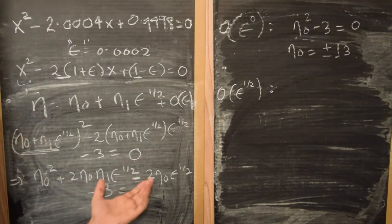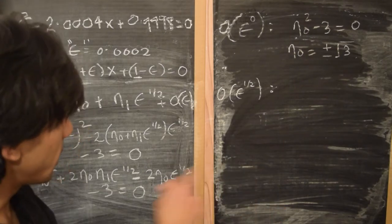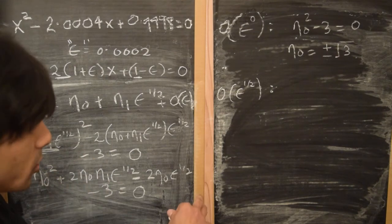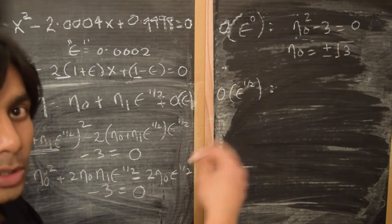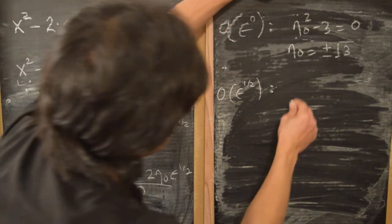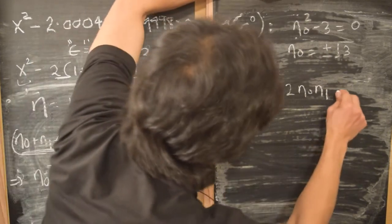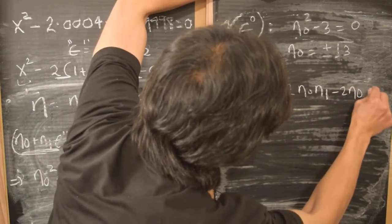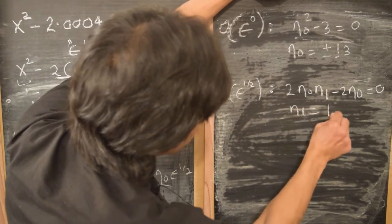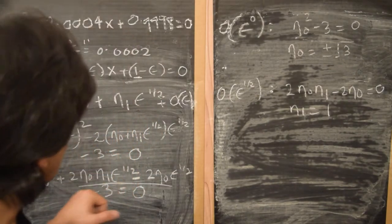Even though this is an expansion in fractional powers of epsilon, we continue to compare the coefficients of each power of ε to zero independently. At order ε^(1/2): 2η₀η₁ − 2η₀ = 0, and this gives us η₁ = 1. So the overall series solution for η is: η(ε) = ±√3 + ε^(1/2).